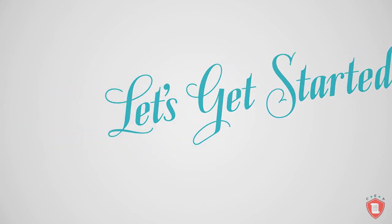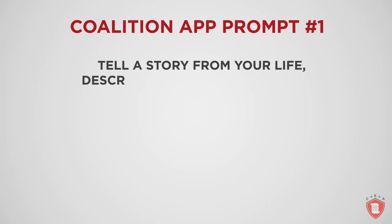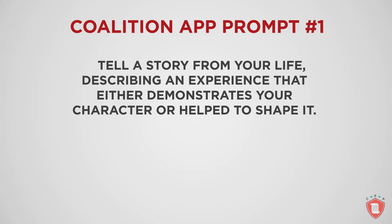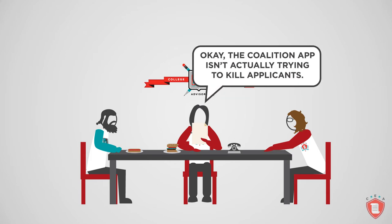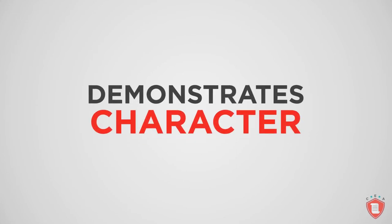The Coalition application's first prompt reads: "Tell a story from your life describing an experience that either demonstrates your character or helped to shape it." When we read this first prompt, we immediately exhaled and said, okay, the Coalition app isn't trying to kill applicants. Prompt number one is wide open and should be a good fit for any tale that demonstrates character, which honestly should be a base requirement of any personal statement you submit.